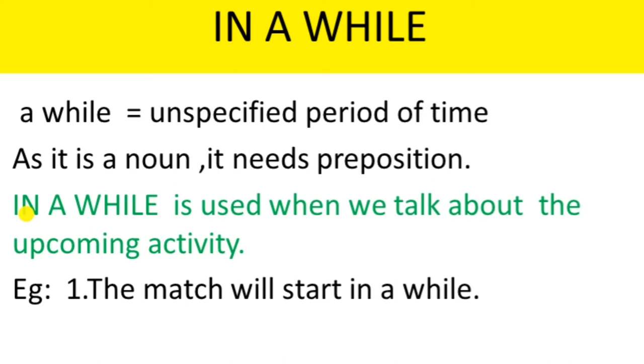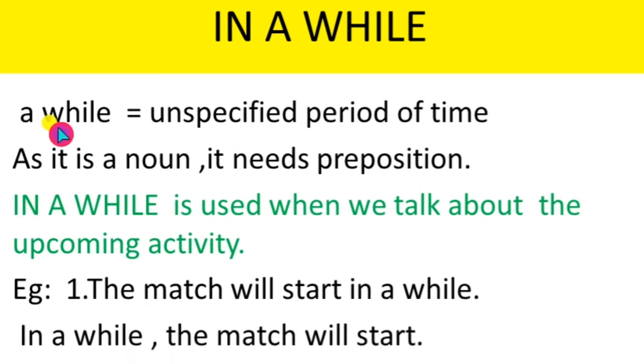We can write 'in a while' at the beginning of the sentence or at the end of the sentence. If we write it at the beginning of the sentence, we have to put a comma after 'in a while' and then write the sentence. If we use it at the end of the sentence, no comma is needed.